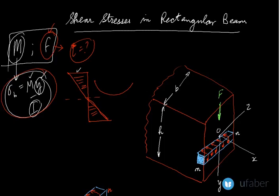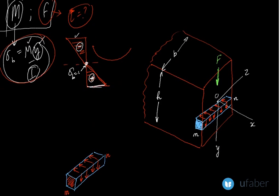The bottommost layer is under tension, producing a positive bending stress, while at the neutral axis the bending stress is zero. This is a brief recap on bending stresses in beams before we begin our analysis.